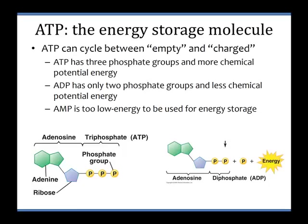ATP is for very, very short-term energy use — you'll use up all the ATP in your cells within a couple seconds under intense exercise. When you use up ATP, you're not breaking down the entire structure — you're just popping off one phosphate group. ATP has three phosphate groups: pop off one, get ADP and release a bunch of energy we can use for cellular work like active transport. ADP has only two phosphate groups and less chemical potential energy. AMP, with one phosphate, is actually used in RNA and is too low energy for energy storage.